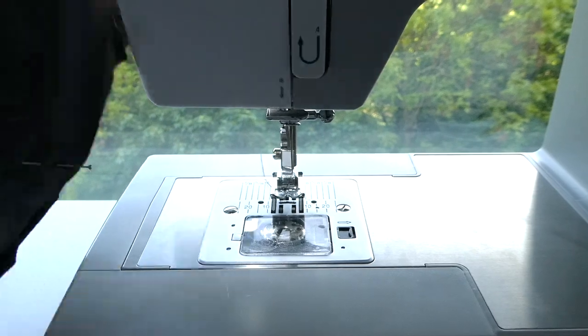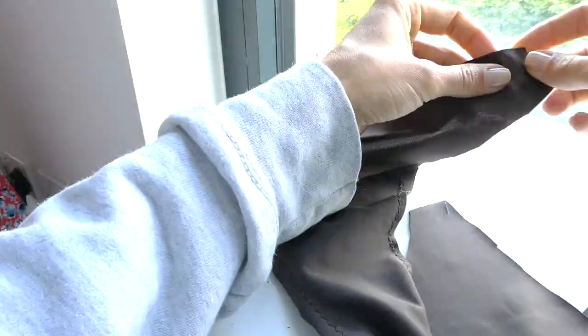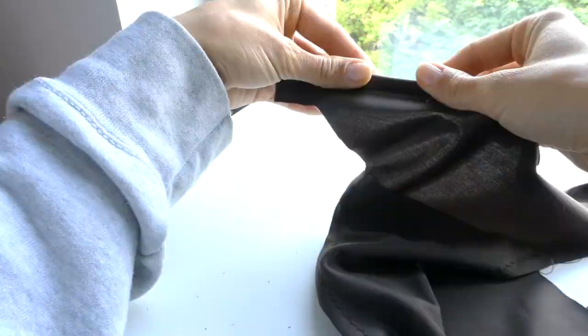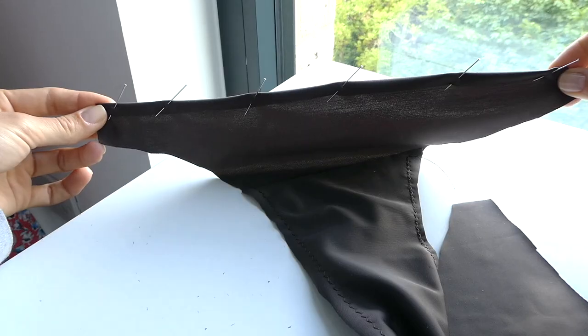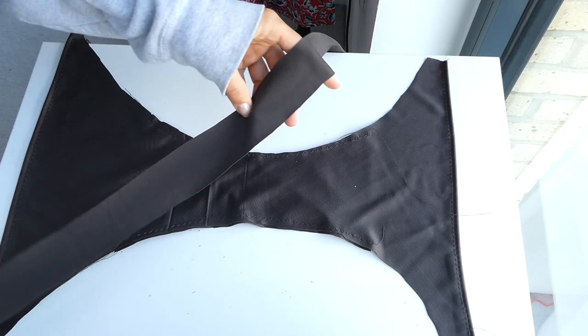So we're going to start by attaching the two layers of the bottoms of our bikini with a zigzag stitch and then we're going to hem the top of the bottoms of the bikini again using a zigzag stitch. And we're going to do that for the front and the back of our bikini.